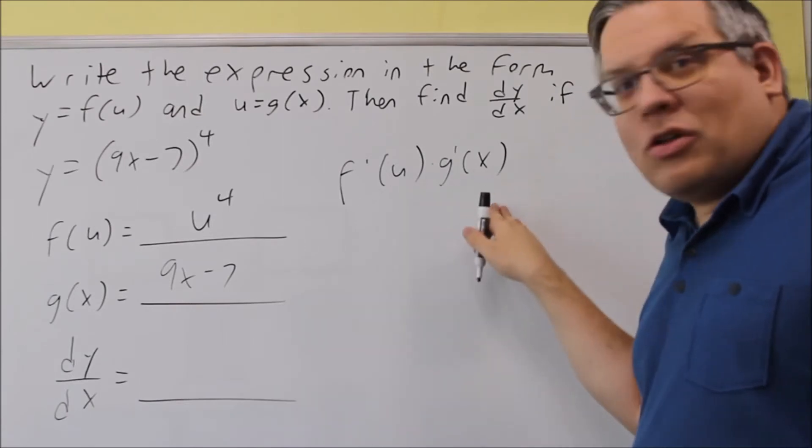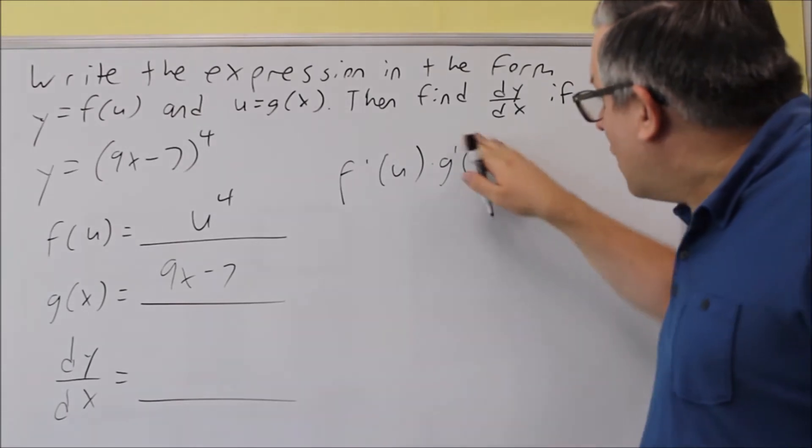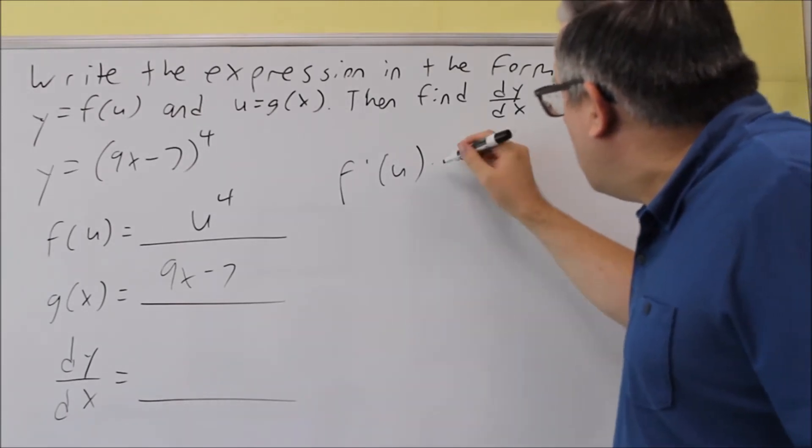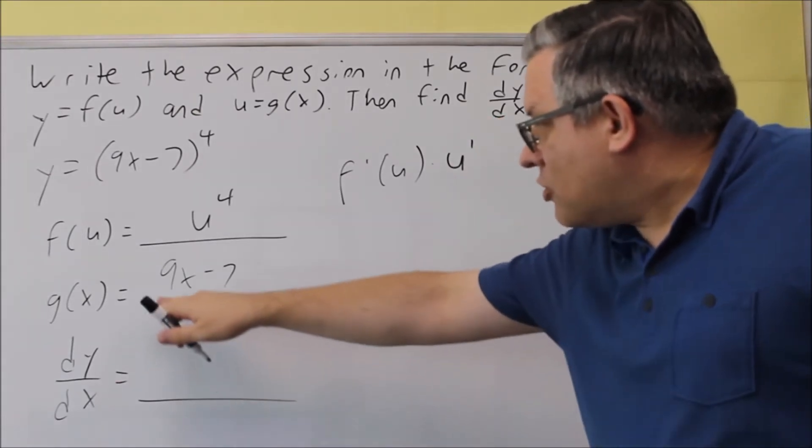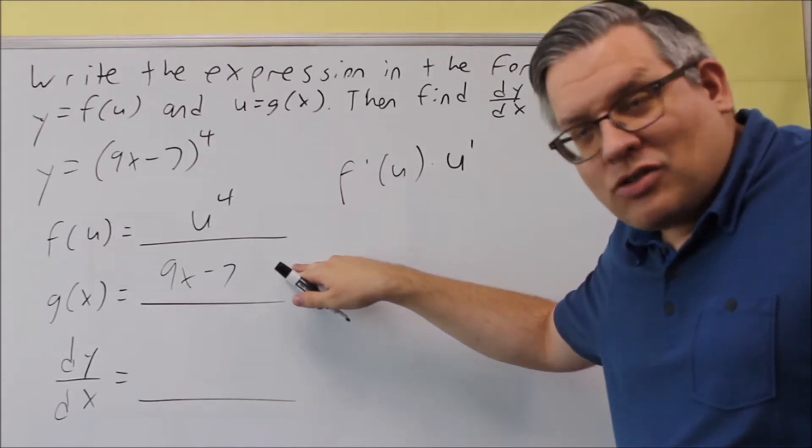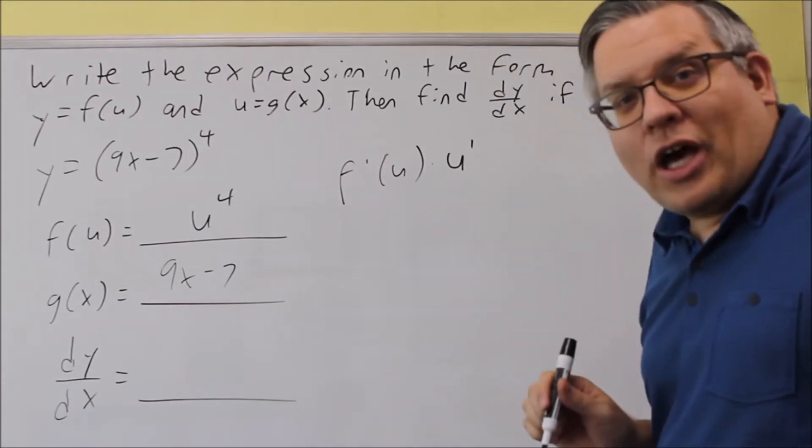So it can be written either this way here, as g of x, or usually you'll see it written as u prime, like that. Same thing, because the u, we're saying, is equal to g of x. So now, let's go ahead and do that.